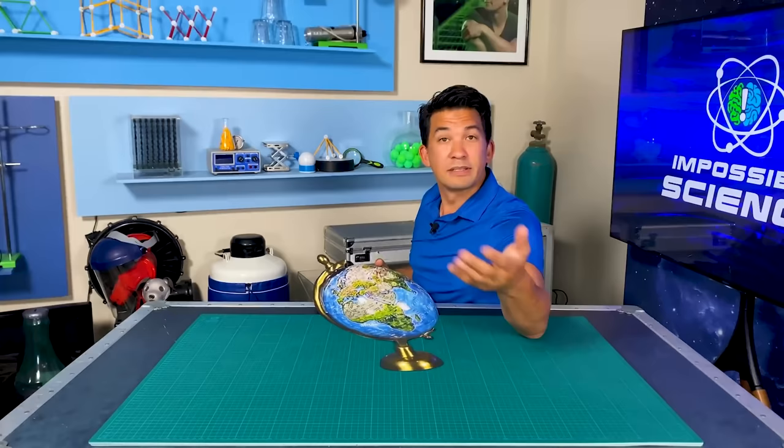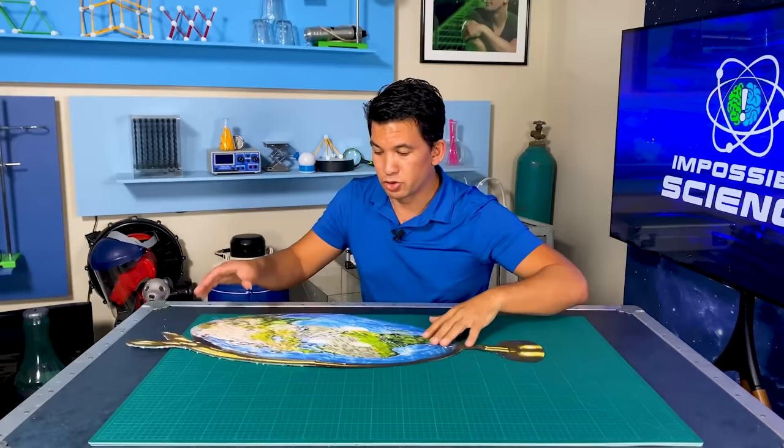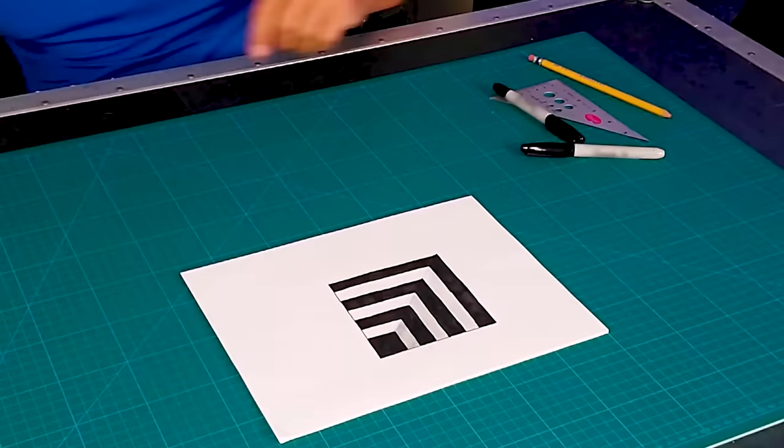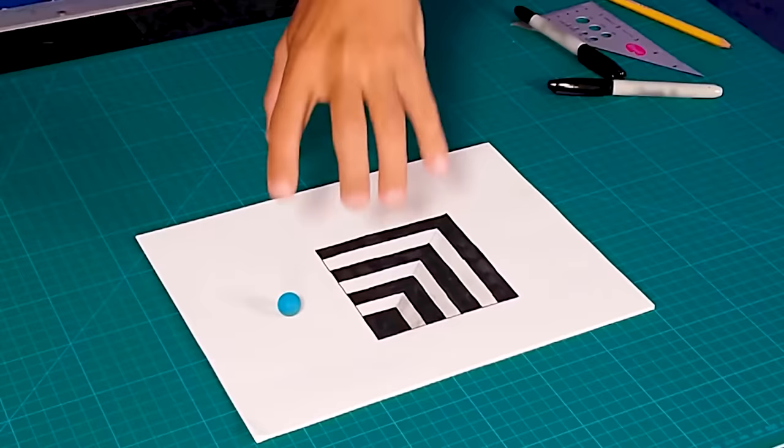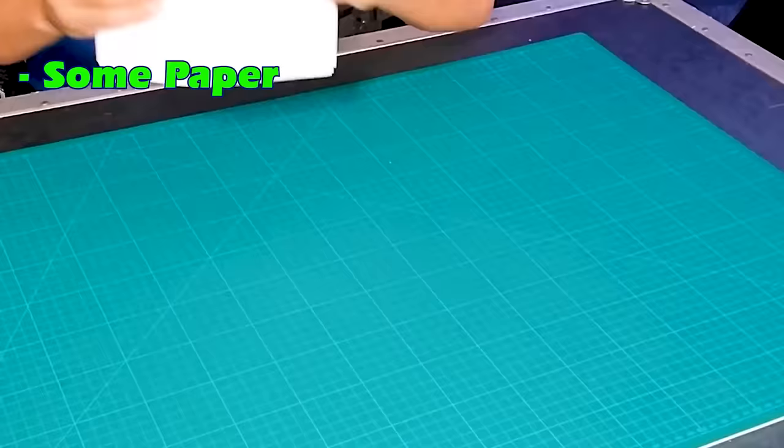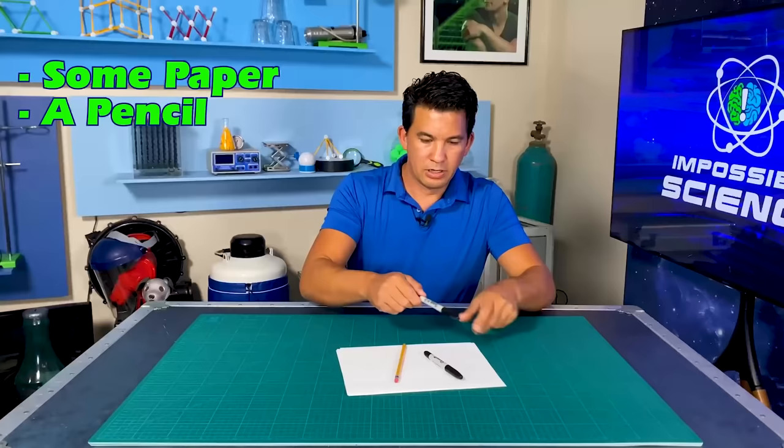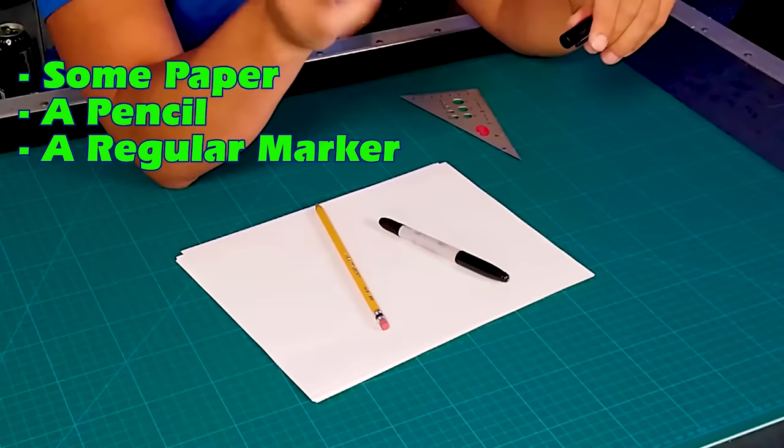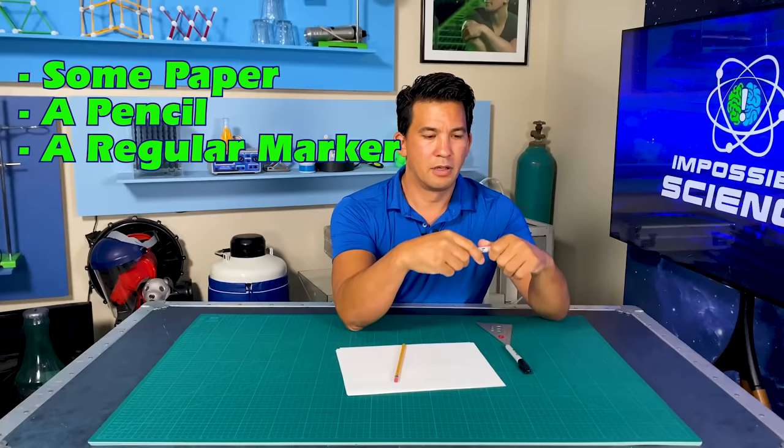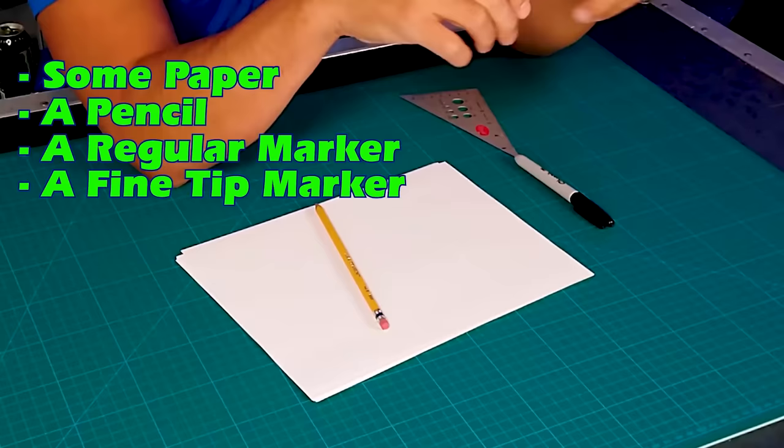Now let's say you don't have photo editing software. Well, I got you. I'm going to show you how to draw an anamorphic image. I scoured the internet and found a super simple way to do it. You're just going to need a few items. You're going to need some paper, a pencil, a regular marker. I'm going to use a Sharpie here. A fine tip marker. And I'm going to be using a straight edge. Actually, I'm using a triangle for this one.